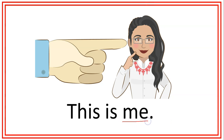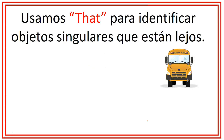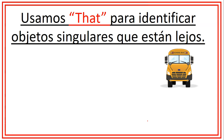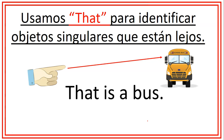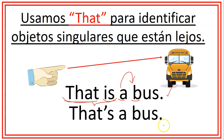Ahora vamos a ver cómo funciona la palabra that. Utilizamos that para identificar objetos singulares que están lejos. Por ejemplo, that is a bus — ese es un camión. Recordemos que la palabra that puede referirse a objetos masculinos o femeninos, y tenemos que utilizar el verbo to be is y la palabra a o an, dependiendo si la palabra comienza con consonante o vocal. También, la palabra that y la palabra is se pueden contraer — podemos decir that is a bus o that's a bus. Las dos oraciones son correctas. En lenguaje formal usamos las oraciones completas, y en lenguaje informal usamos las contracciones.